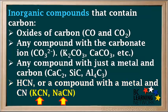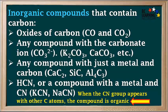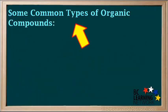Note that when the CN group appears along with other carbon atoms in a compound, the compound is organic. An example is CH3CN, an organic compound called acetonitrile. To help you identify organic compounds, it's good to know a few of the common types and some examples of each.